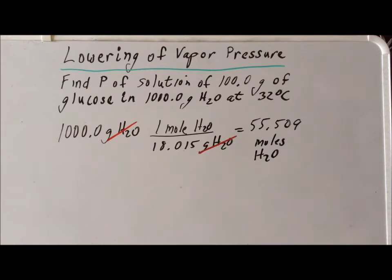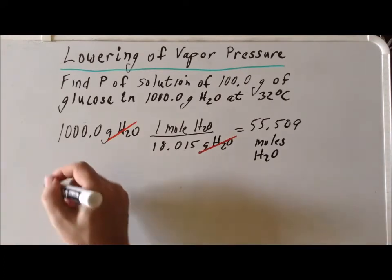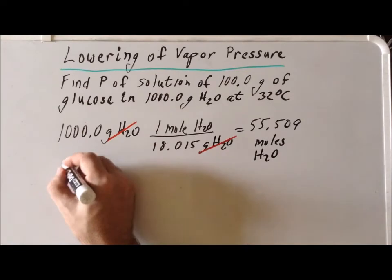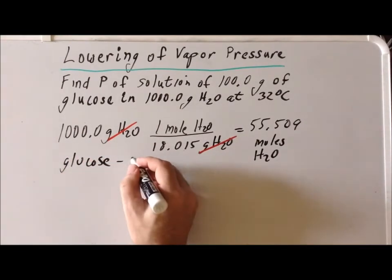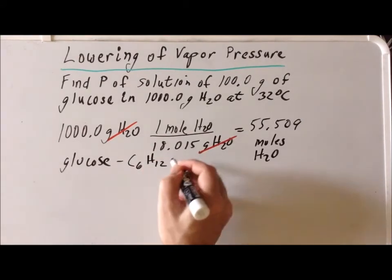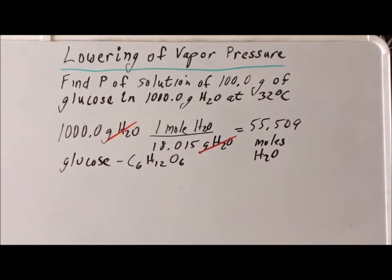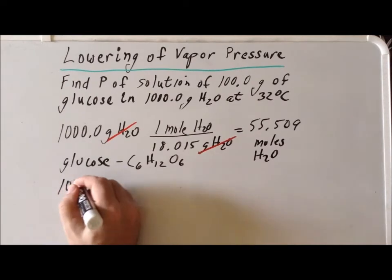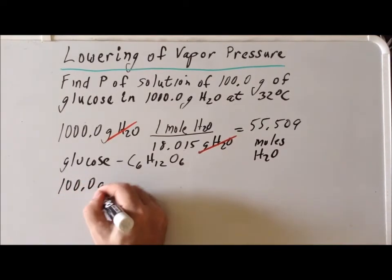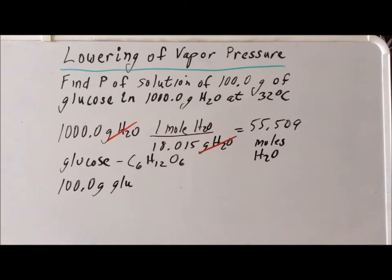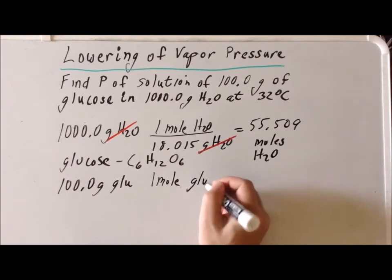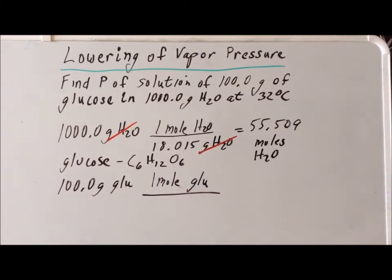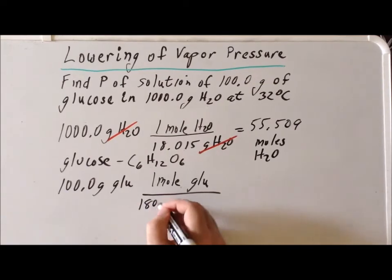Now we can do the same calculation for glucose. Recall that glucose has the chemical formula C6H12O6. So 100 grams of glucose, and we notice that one mole of glucose has a molar mass of 180.16 grams.